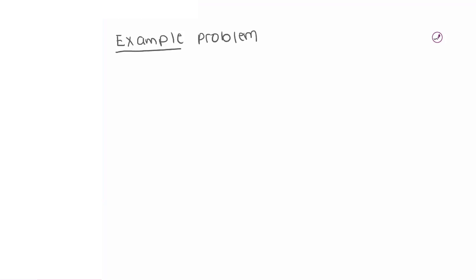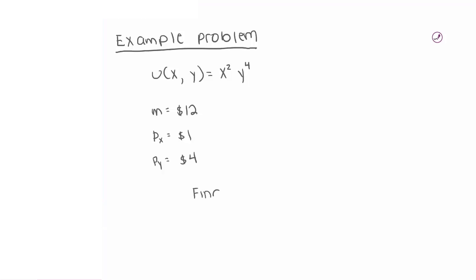The example problem we're going to work with: typically in these questions you'll be given a utility function first. Our utility function for this problem is x squared times y to the fourth, where x is the quantity of good x and y is the quantity of good y. We're also told that income m equals $12, the price of x equals $1, and the price of y equals $4. Our goal is to find the optimal amount x-star and the optimal amount y-star.